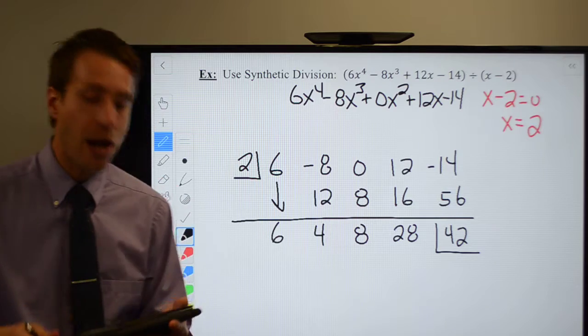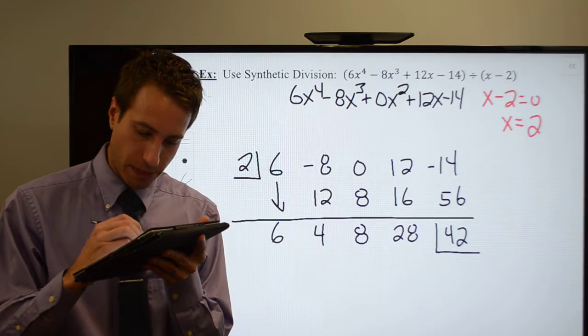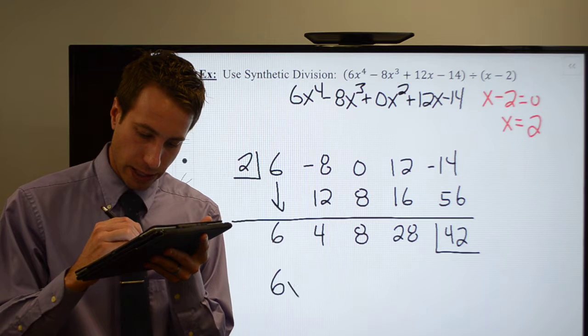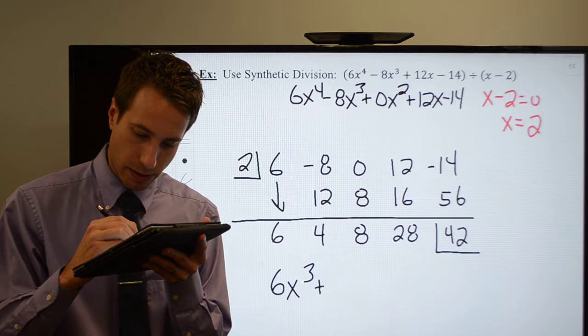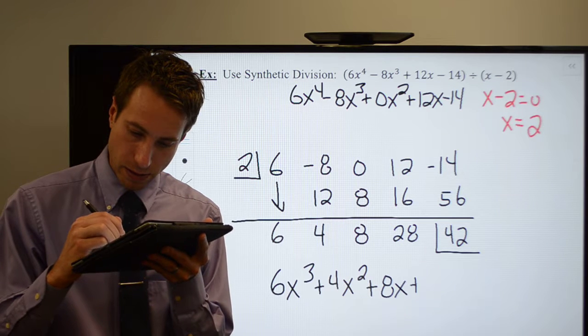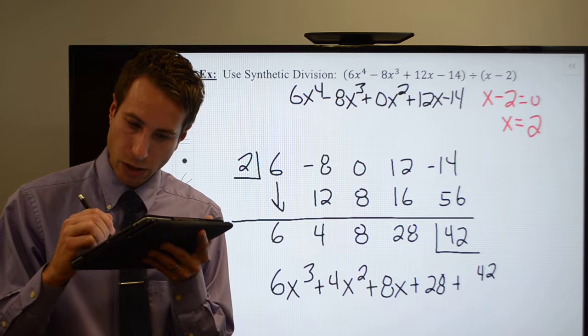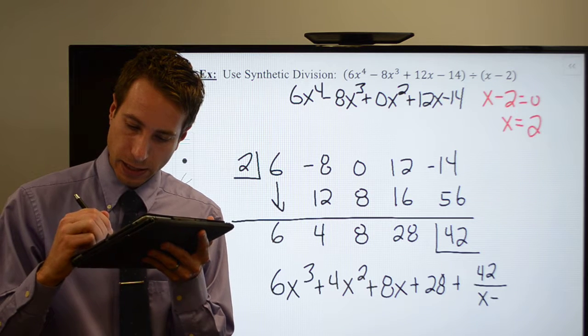My original polynomial was 4th degree, which means mine is going to be 3rd degree: 6x³ + 4x² + 8x + 28 plus 42 over x minus 2.